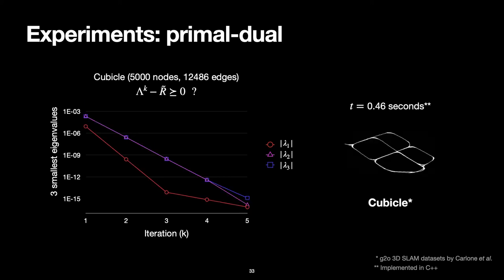For another dataset, the cubicle with 5000 nodes, we see similar behavior, attaining machine precision of the eigenvalues after 0.46 seconds. I'd like to bring your attention to the fact that the initialization is already extremely good since the eigenvalues are already very close to zero.